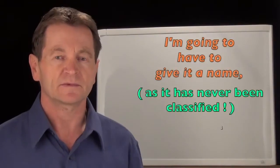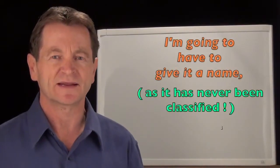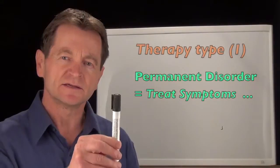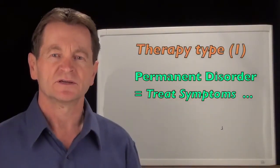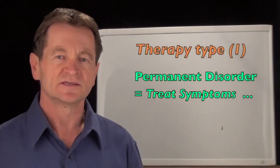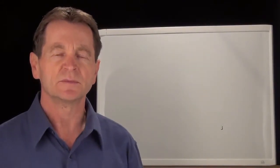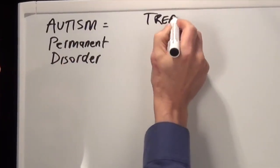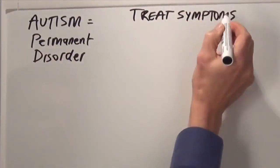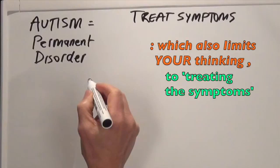Therapy number one, and I'm going to have to give it a name because it's never been classified before, is the Disorder Symptom Approach to Mild Autism. This is the traditional method where the therapist considers mild autism to be a permanent incurable disorder. And when your therapist tells you that treating symptoms is all you can do, that limits your thinking too to just treating the symptoms.